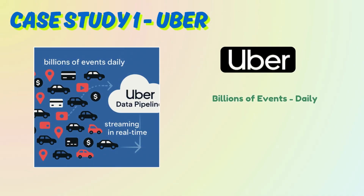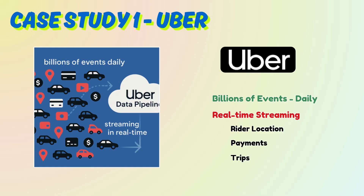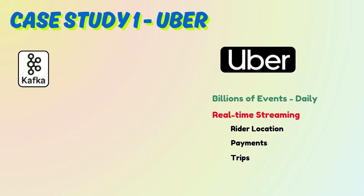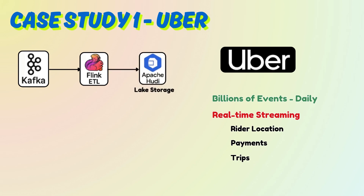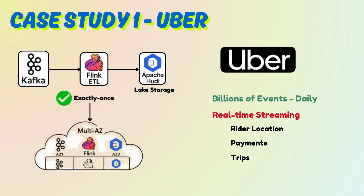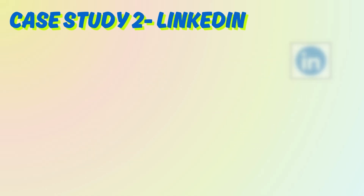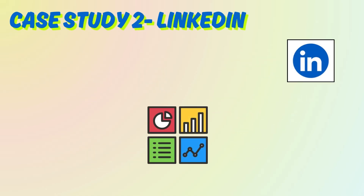Now let's look at how the tech giants build this. Uber handles billions of events daily — radar, location, payments, trips — all streaming in real time. They use Kafka for ingestion, Flink for ETL, and Apache Hudi for lake storage. High availability is achieved through multi-availability zone clusters and exactly-once processing.